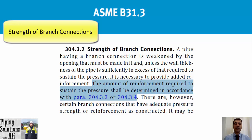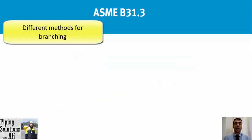The amount of reinforcement required to sustain the pressure shall be determined in accordance with paragraph 304.3.3 or 304.3.4. In case of need for reinforcement, we should refer to those mentioned paragraphs. Now it is a good time to talk about the different methods used for branching from a run pipe, also named a header.